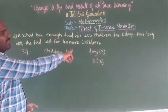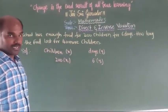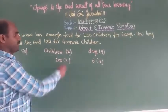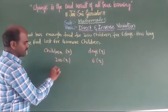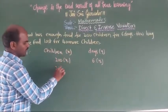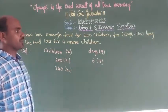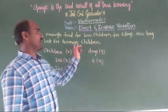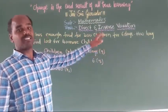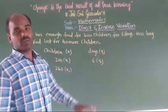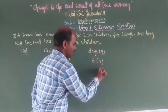40 more children are joining. So 200 plus 40 becomes 240 children, which is x2. We have to find how many days — that will be y2, which is question mark.